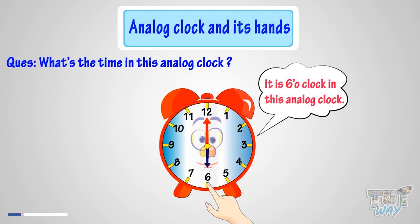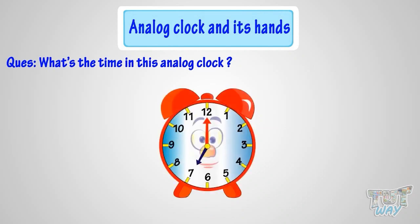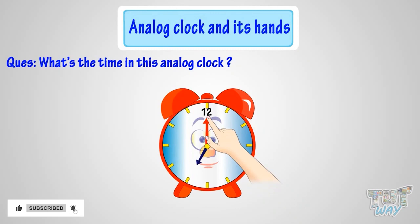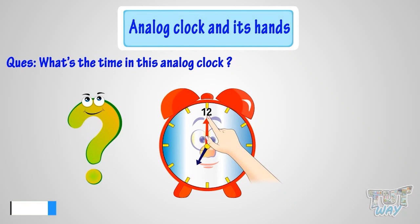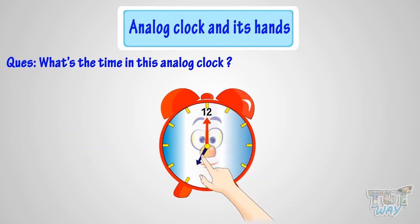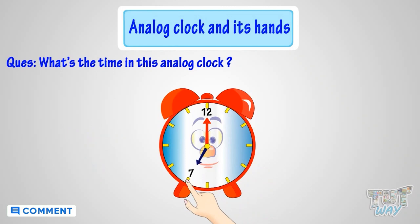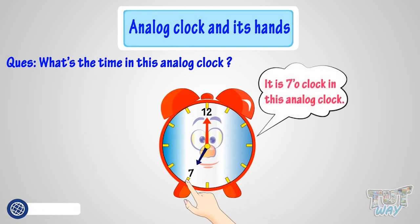Here we have another example. Can you tell me what's the time in this analog clock? When the minute hand is at 12, it is time to the hour. But to which hour? The hour hand tells the hour. As the hour hand is pointing at 7, it's 7 o'clock.